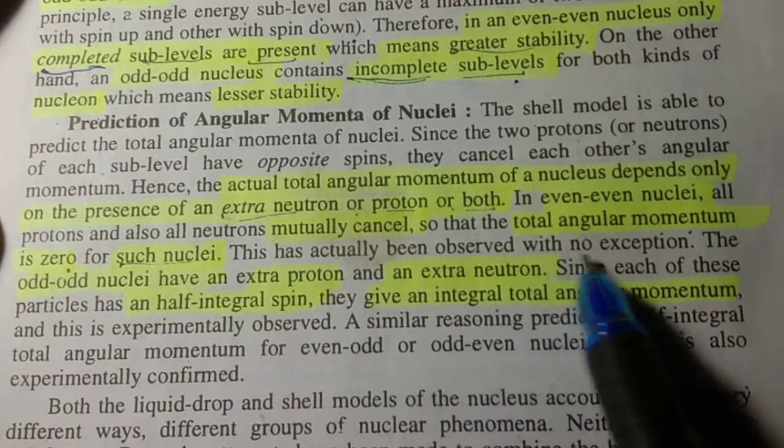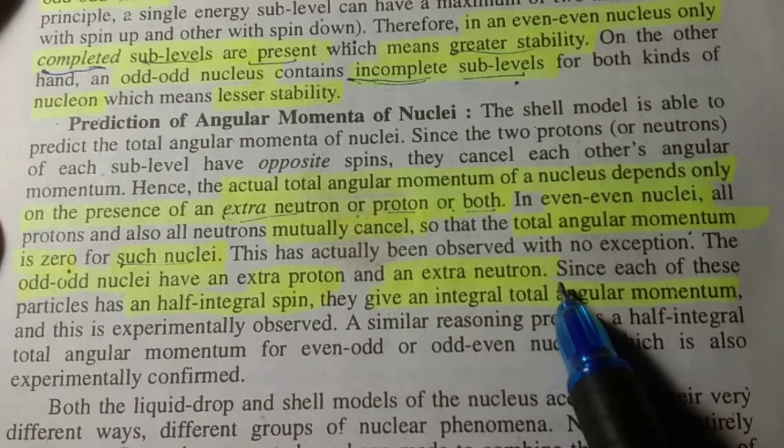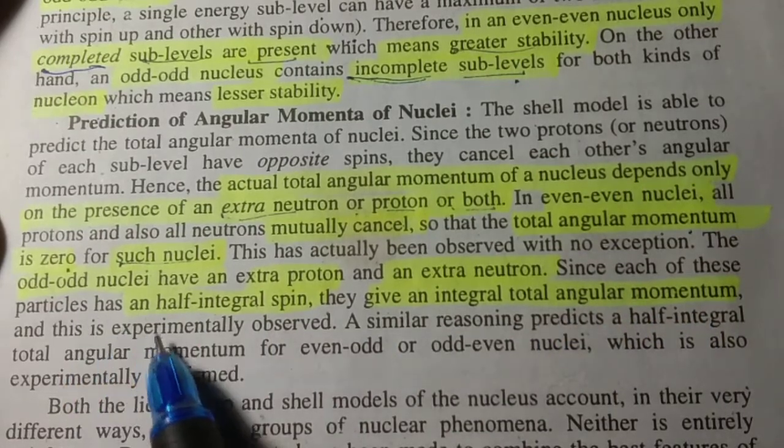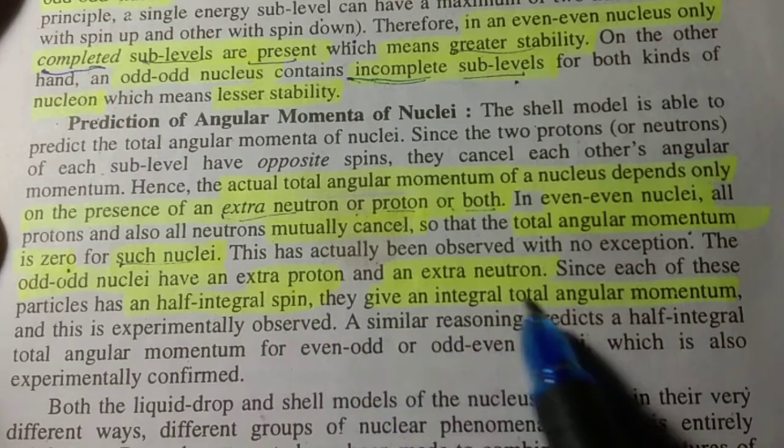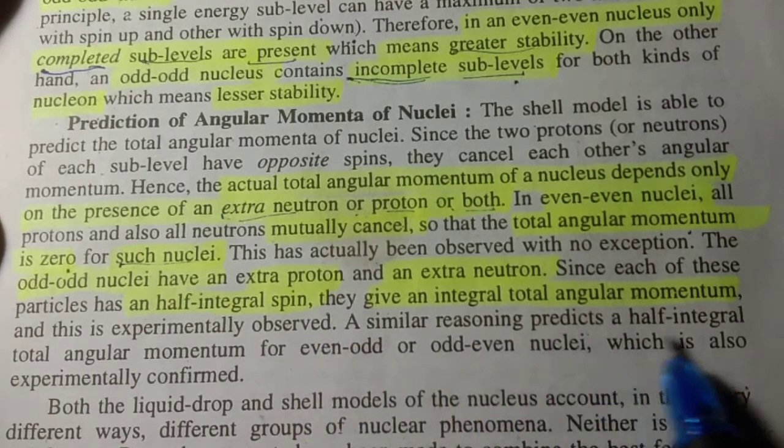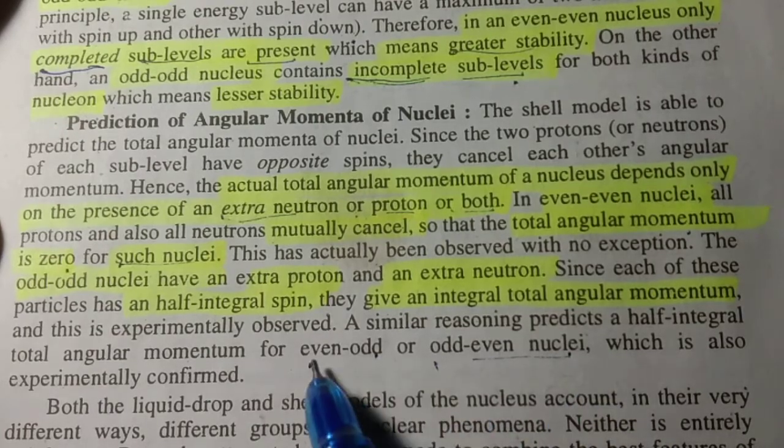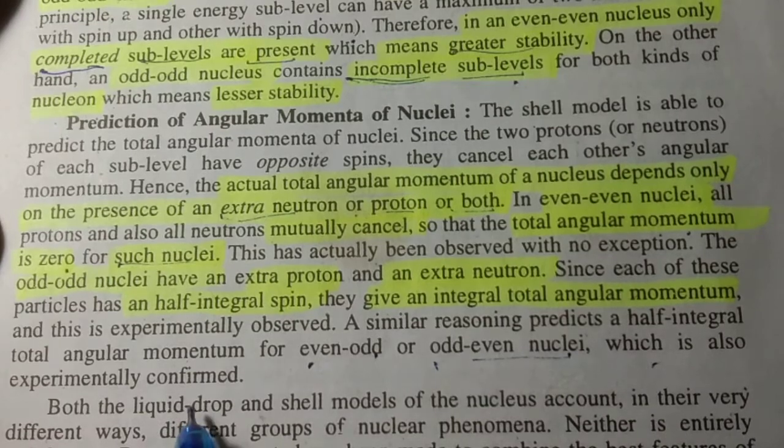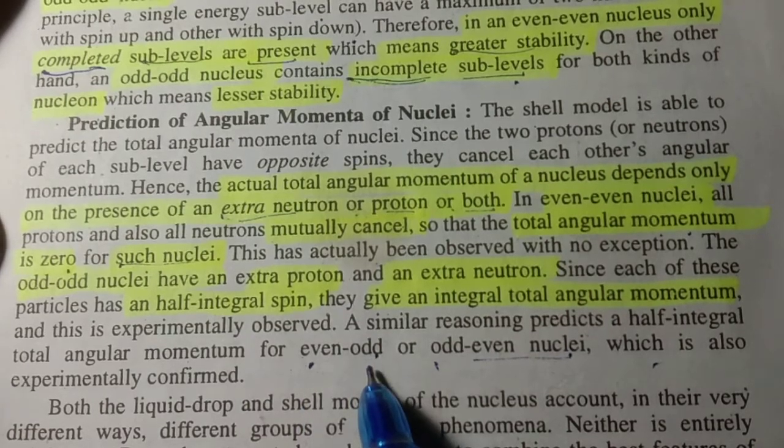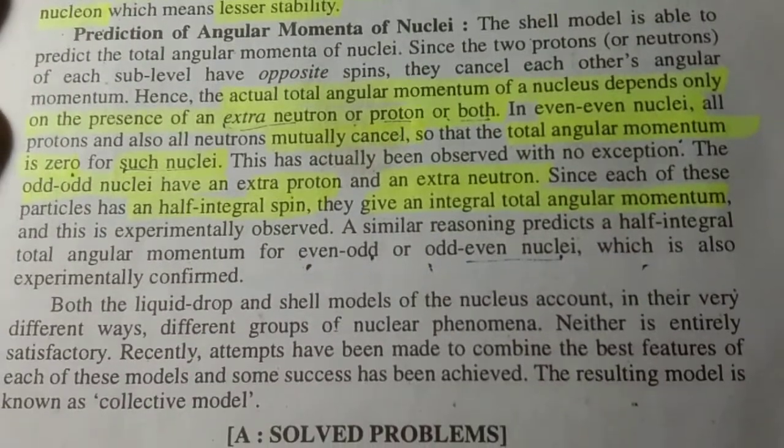The odd-odd nuclei have an extra proton and an extra neutron. Since each of these particles has a half-integral spin, they give an integral total angular momentum, and this is experimentally observed. A similar reasoning predicts a half-integral total angular momentum for even-odd or odd-even nuclei, which is also experimentally confirmed. Even-odd means the number of protons is even and neutrons is odd, or protons is odd and neutrons is even.